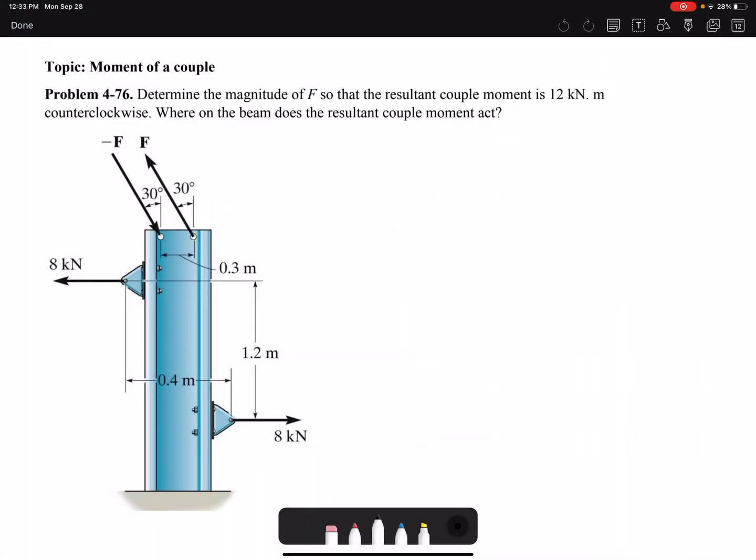Hello everyone, today we are going to solve Problem 4-76 of Chapter 4. Determine the magnitude of force F so that the resultant couple moment is 12 kilonewton meter counterclockwise. Where on the beam does the resultant couple moment act?